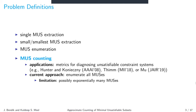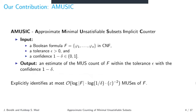Due to massive improvements in solvers over the past two decades, Boolean formulas are widely used across computer science, and MUSes have many applications — identifying a single MUS, finding the smallest MUS, enumerating all MUSes, or counting them. We focus on counting, typically to evaluate the level of unsatisfiability of a formula. The current approach enumerates all MUSes, but there can be exponentially many, making it intractable. Our contribution is AMuSe, an approximate MUS counting algorithm, which needs to explicitly identify only logarithmically many MUSes.